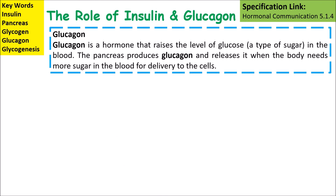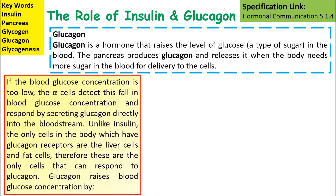Glucagon is a hormone that raises the level of glucose. The pancreas produces glucagon and releases it when the body needs more sugar to be delivered to the cells. When blood glucose concentration is too low, the alpha cells detect this fall and respond by secreting glucagon directly into the bloodstream. Unlike insulin, the only cells in the body which have glucagon receptors are the liver cells and the fat cells, so these are the only cells that can respond to glucagon.